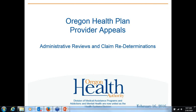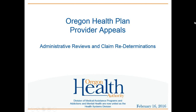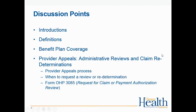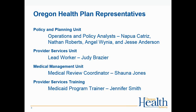The presentation today is for administrative reviews and claim redeterminations, which are two different types of provider appeals for the Oregon Health Plan. Discussion points include definitions for benefit plan coverage, the difference between claim redeterminations and administrative reviews, the provider appeals process, when to request a review, and the updated form OHP 3085.